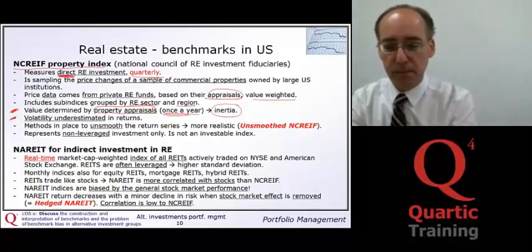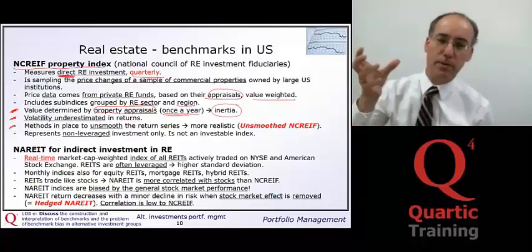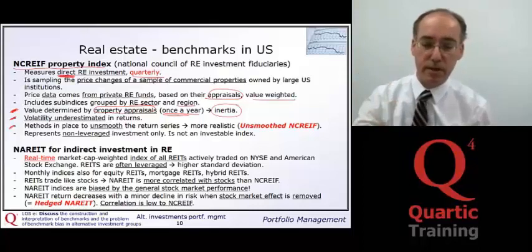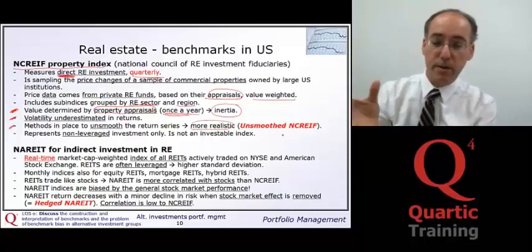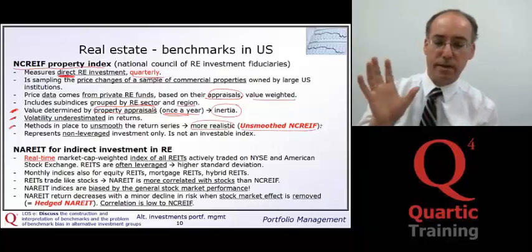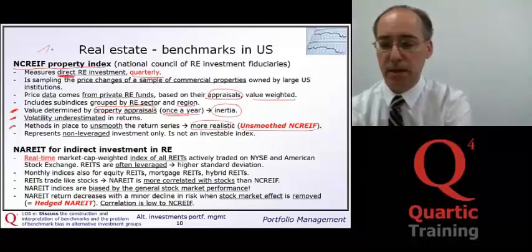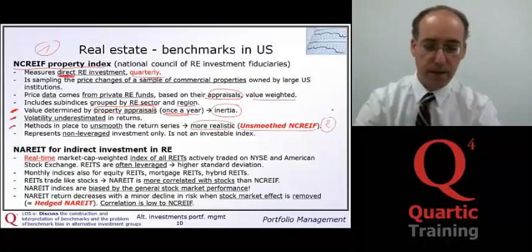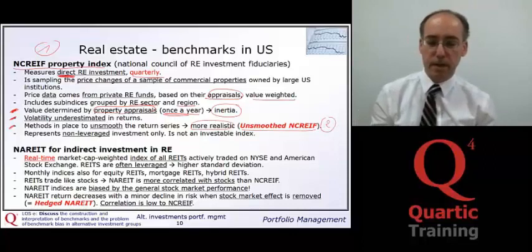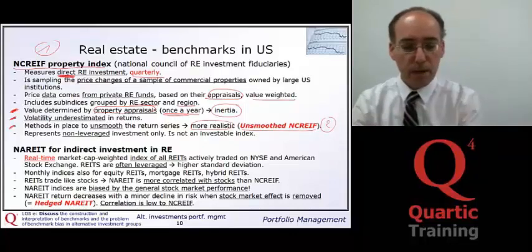Because volatility is underestimated due to appraisal-based pricing, methods have been developed to unsmooth the return series to achieve a more realistic picture. A variation of this index called the unsmoothed NCREIF index exists for this purpose. It is also important to note that this is not an investable index.